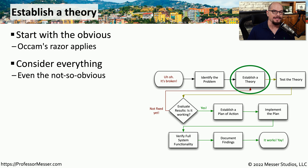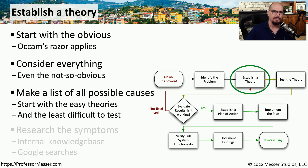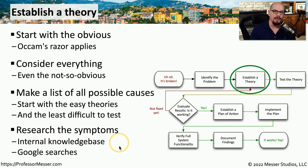But it may be that the problem we're having is not something common or usual, so we need to think outside the box about what might be causing it. We might want to make a list of all possible causes — putting the more obvious causes at the top and the more unusual root causes lower in the list. We want to test our theories to see which one may be the root cause. We might also get clues by looking at documentation on Google or internal knowledge bases, as someone else may have already encountered this exact issue.